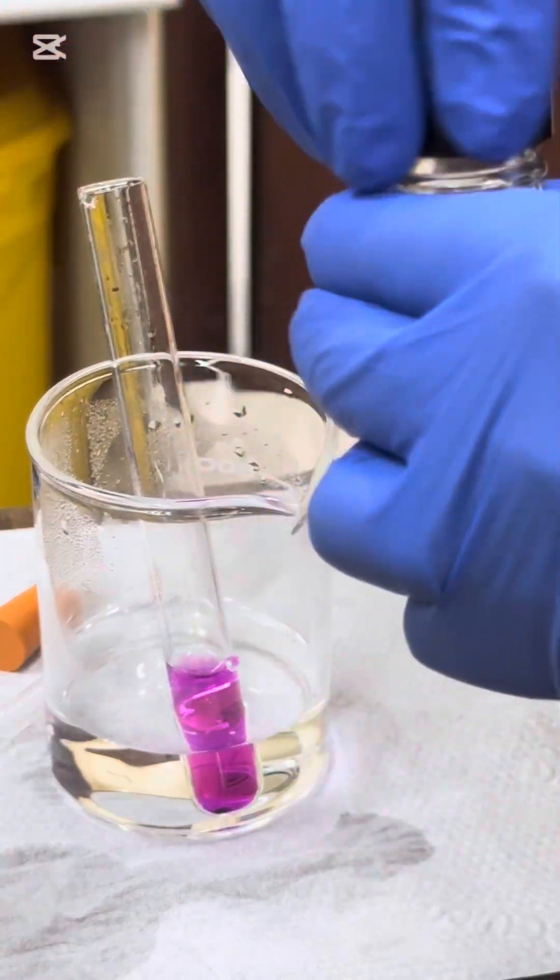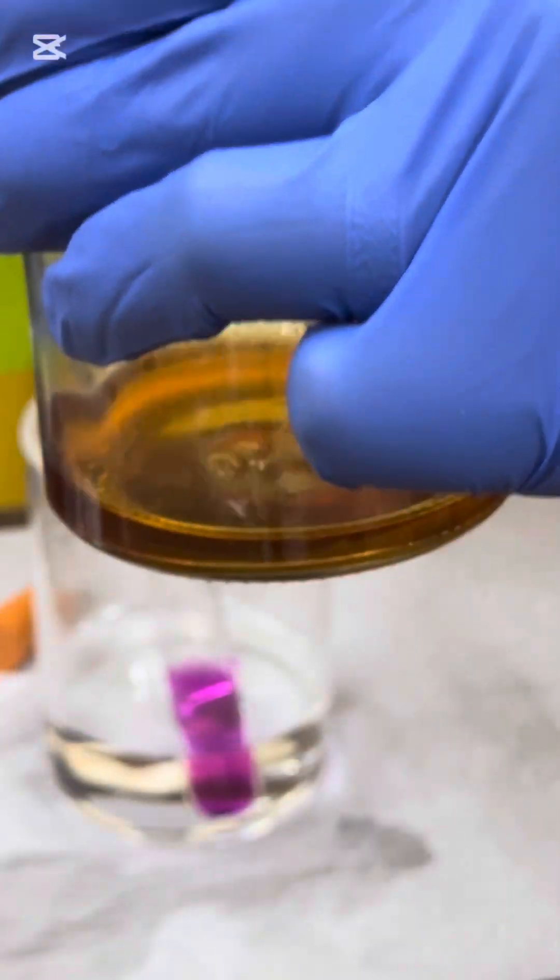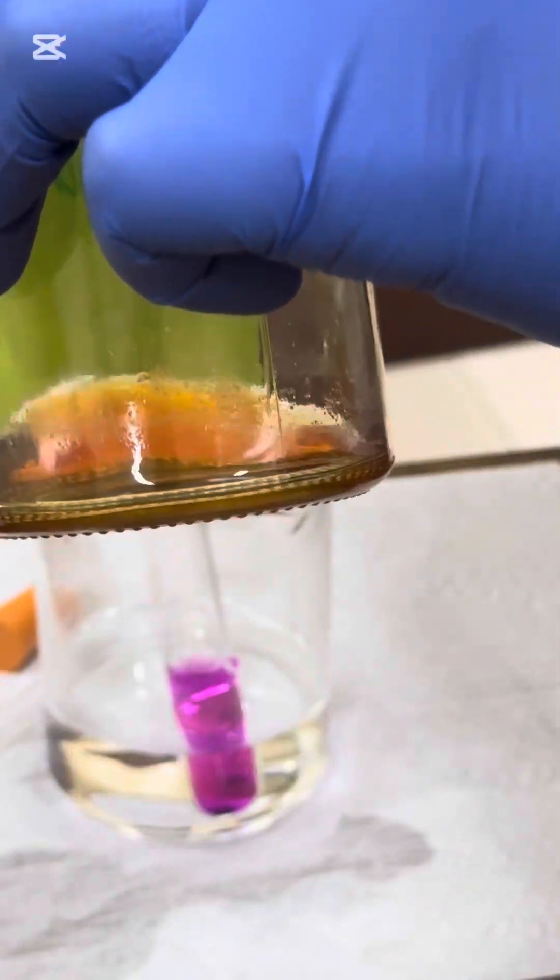Now, what I'm going to use is cyclohexene, but it looks a little bit different to the cyclohexene that you might know yourself because I've put an orange additive. This is just to show which part is the organic layer.